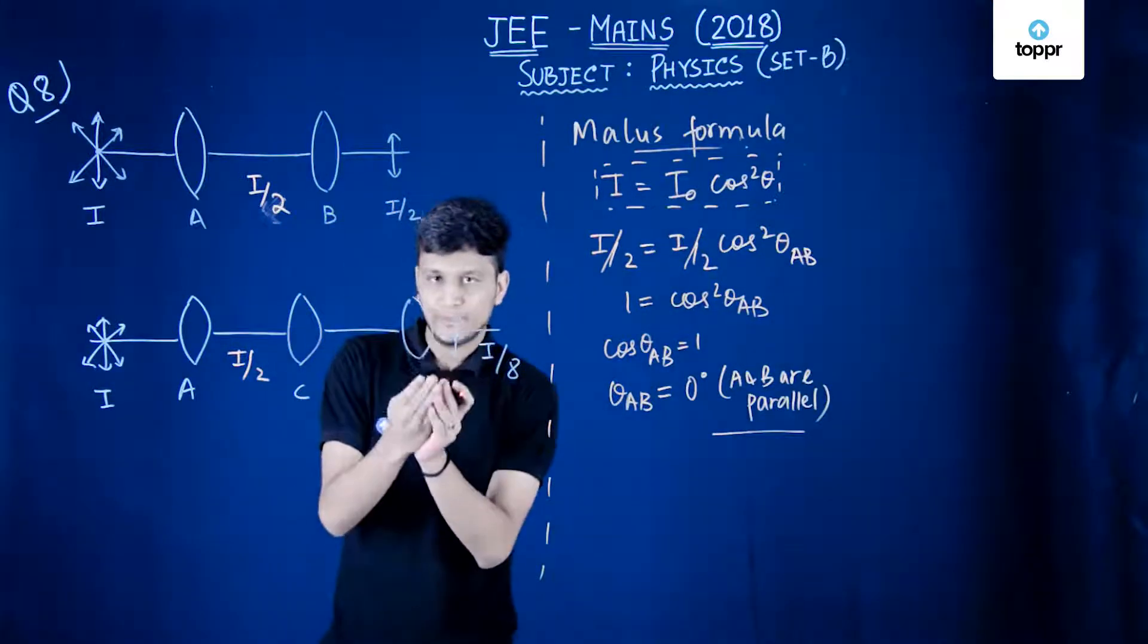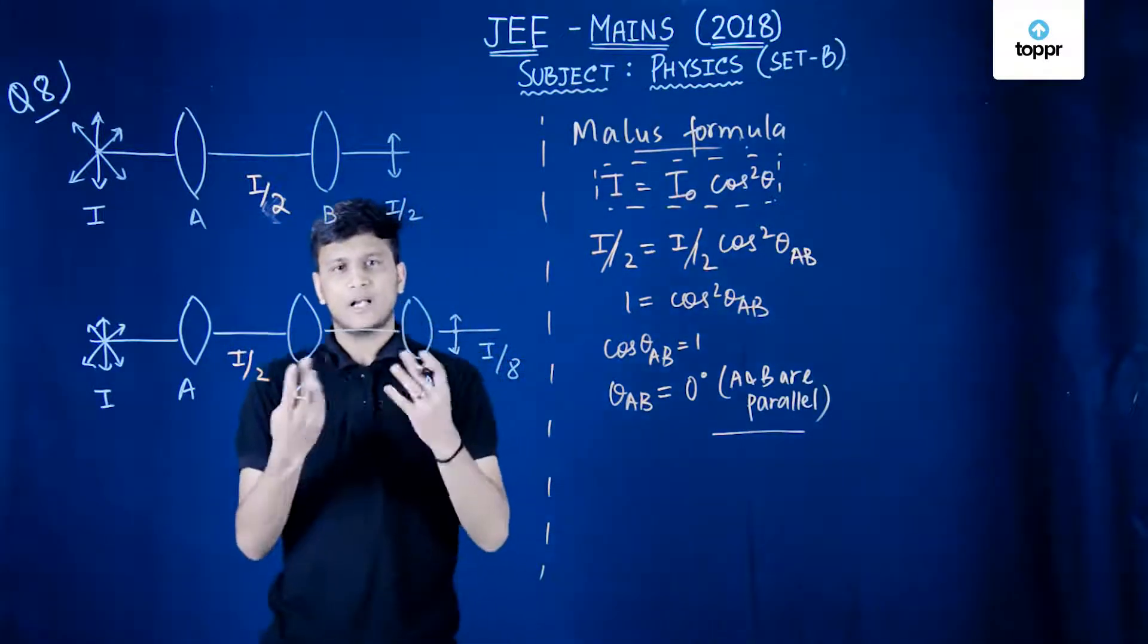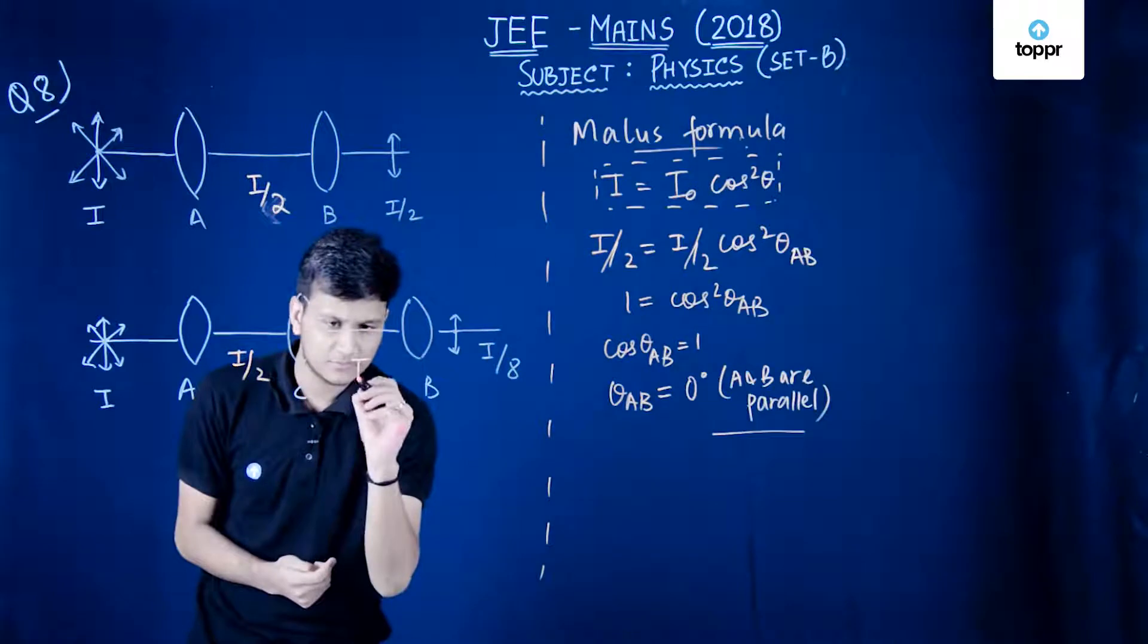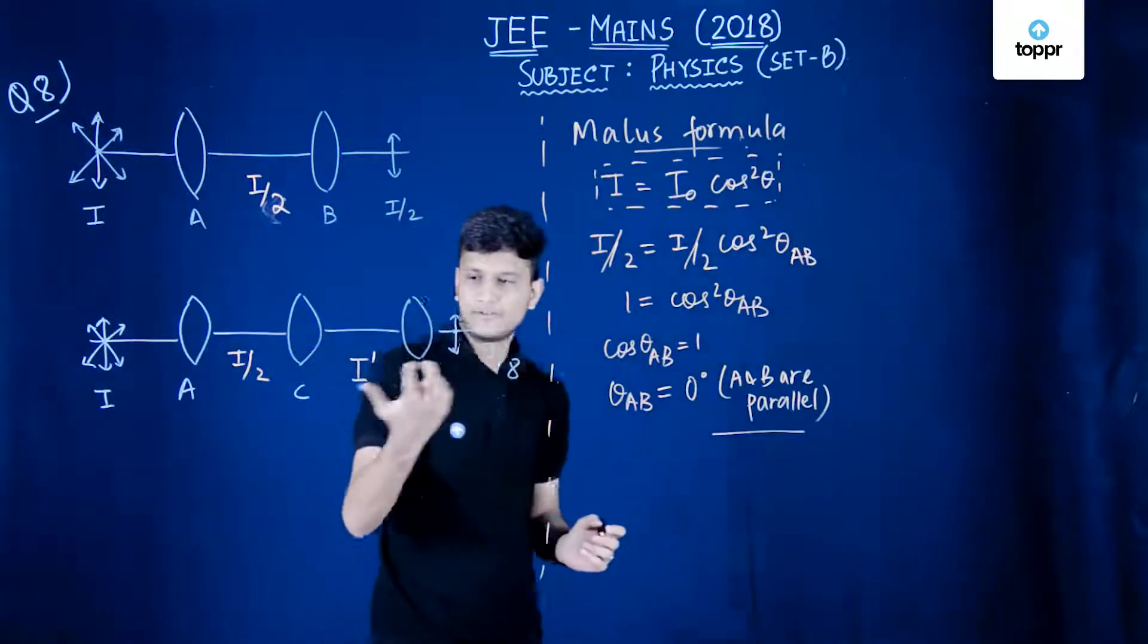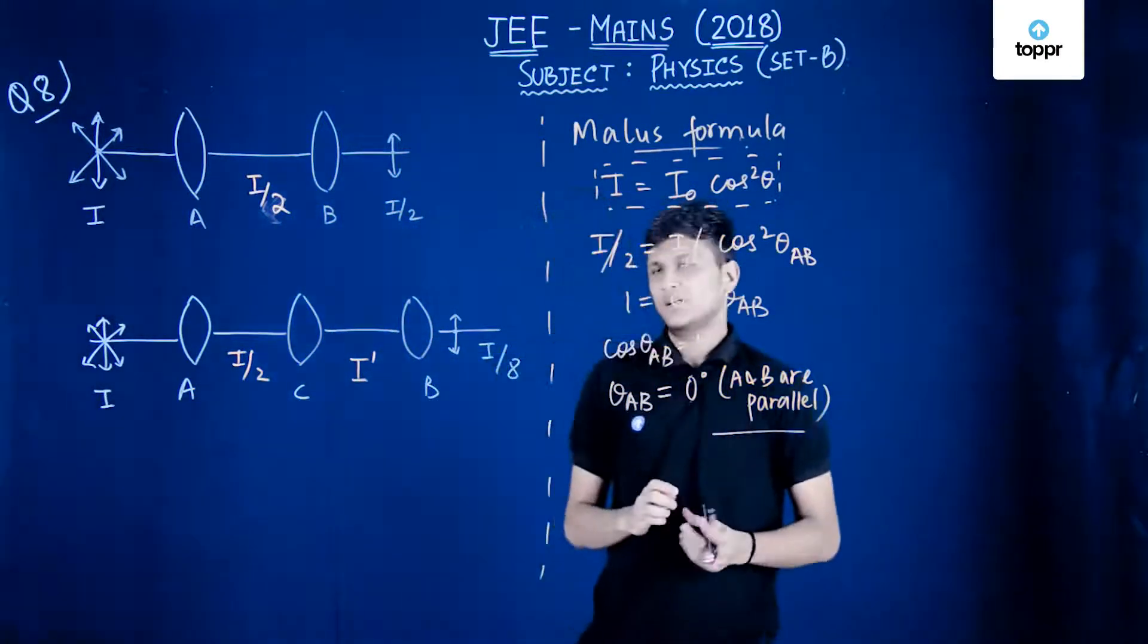From C to B the intensity would become something. Let us say it becomes I prime, and then from I prime it becomes I by 8.